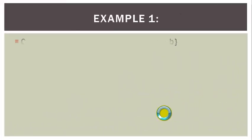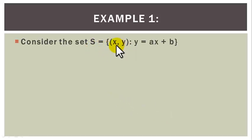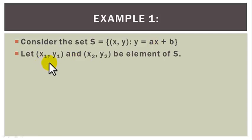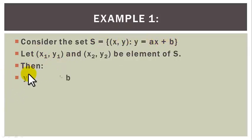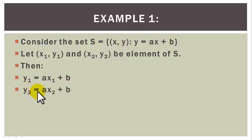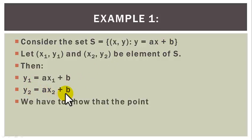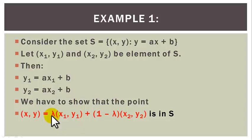Example 1. Let us consider the set S of all ordered pairs (x, y) such that y equals ax plus b — that is, the set of all points on a straight line. Let us take two points (x_1, y_1) and (x_2, y_2) in S. Since (x_1, y_1) is in S, it satisfies y_1 equals ax_1 plus b. Since (x_2, y_2) is in S, it satisfies y_2 equals ax_2 plus b. We must show that the point (x, y) equal to lambda(x_1, y_1) plus (1 minus lambda)(x_2, y_2) is also in S.